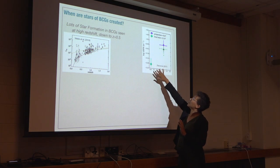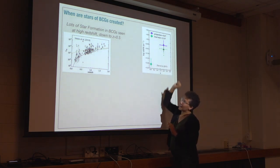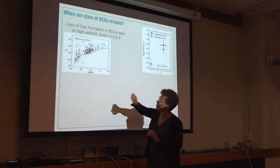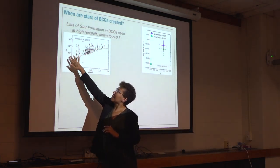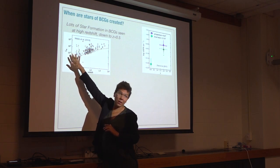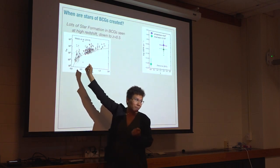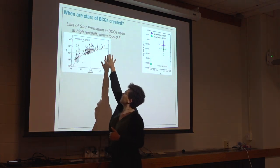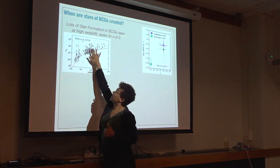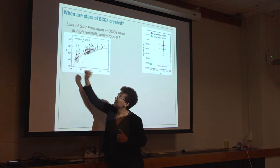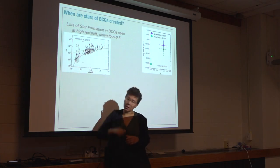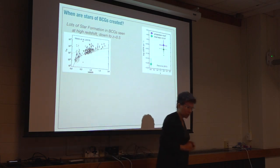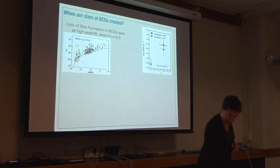People have done work on trying to figure out different ways to get progenitors to the BCGs, again corroborating what we just saw: that star formation rates are higher in the past for BCGs. If we look at the total infrared luminosity as a proxy for star formation, that decreases — these are BCGs — that decreases as you go to today, to redshift zero.